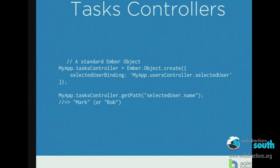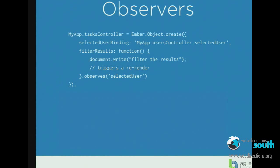We're going to build a task controller. We'll create a selected user binding to the users controller. What that does is say: when the users controller's selected user gets updated, that data is going to magically appear in our tasks controller. So we're now propagating data around the system in a nice declarative format — easy to read and understand.